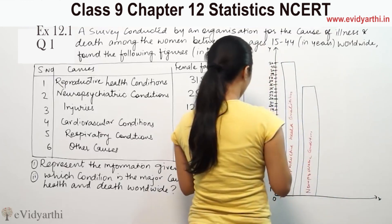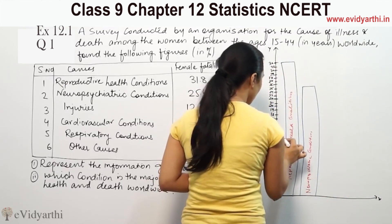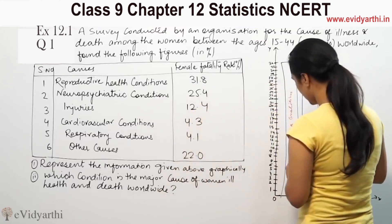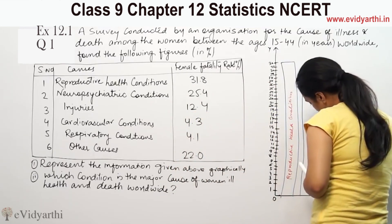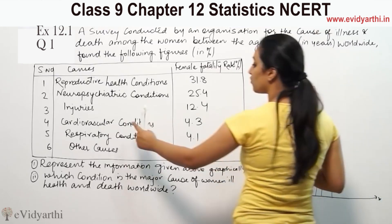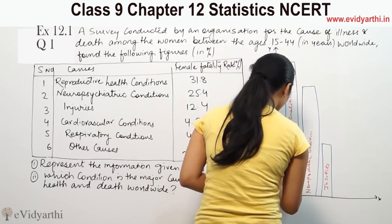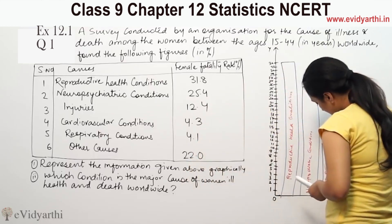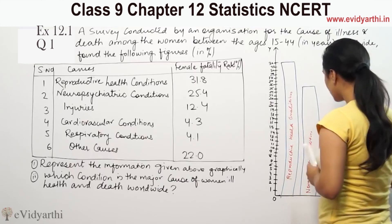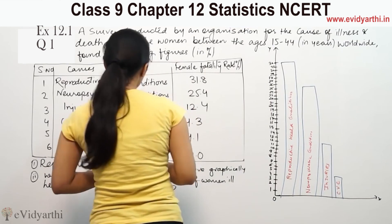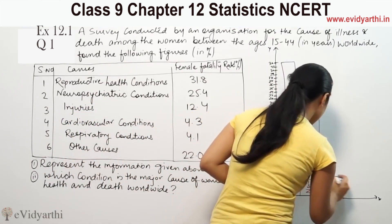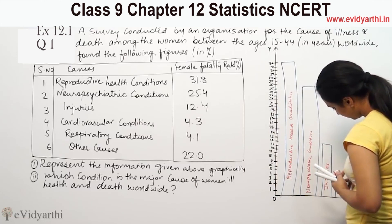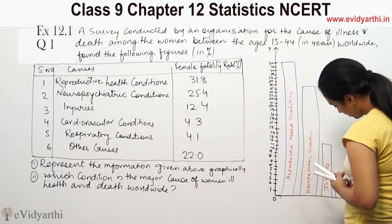Next is injuries at 12.4. This bar represents injuries. Then cardiovascular conditions at 4.3 — writing it in short form here. Respiratory conditions is 4.1, and this bar represents respiratory conditions.